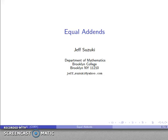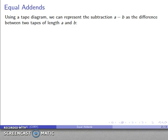Another way of looking at subtraction is an approach called equal addends, and this emerges from the following. If we go back to our tape diagrams, then if I look at the subtraction A minus B, I can view this as the difference between two tapes where one tape has a length of A and another tape has a length of B.